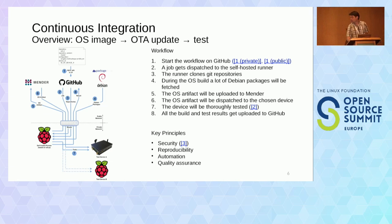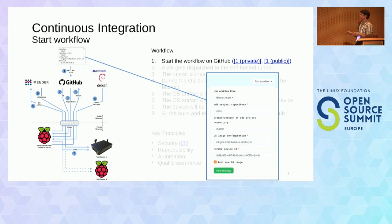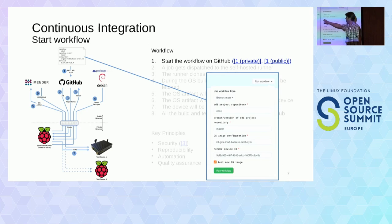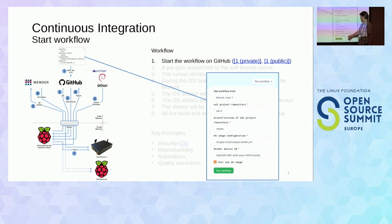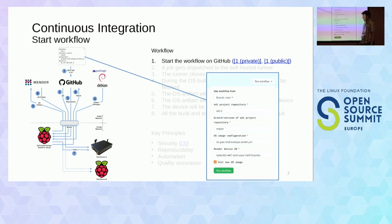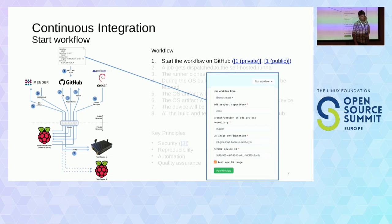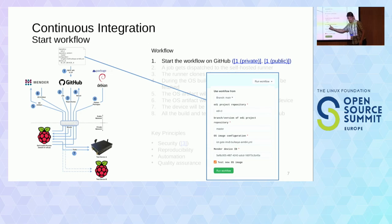Let's dig into the details. The slides are available online if you can't read them from the back. We enter the repository that contains the description of the OS image, take the master branch, specify the configuration we want, and the UUID identity of the device registered in Mender. We also check the box to run tests.